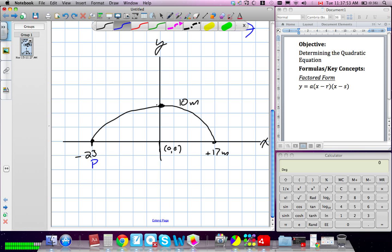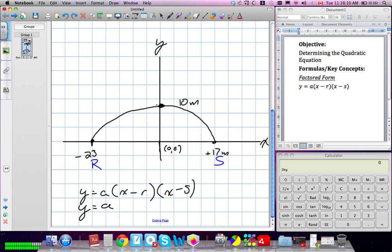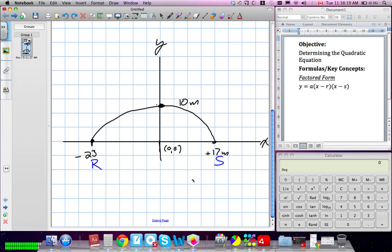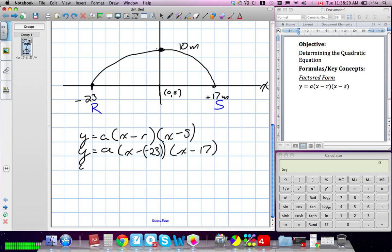Our factored form is y equals A times x minus R times x minus S. So, when we go to plug those values in, y equals A times x minus negative 23 times x minus 17. We're going to simplify those terms. Y equals A times x plus 23 times x minus 17.